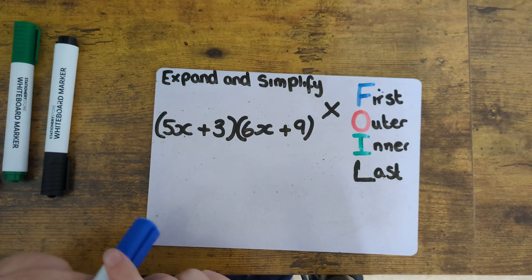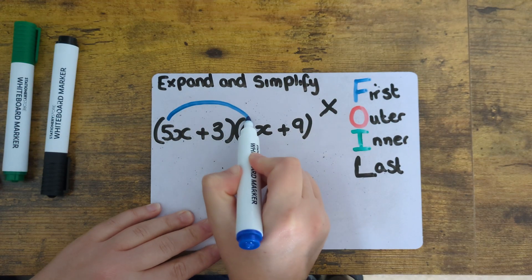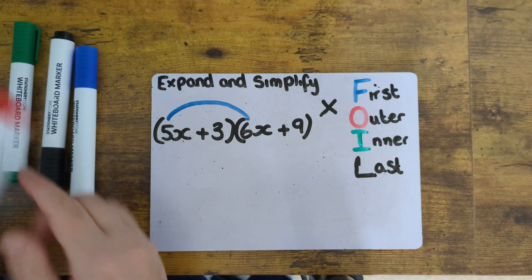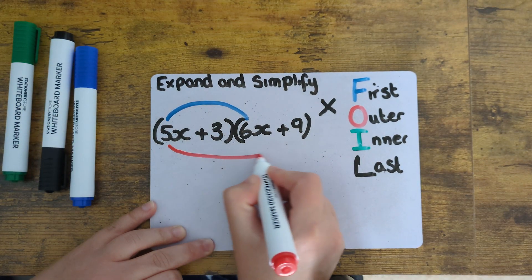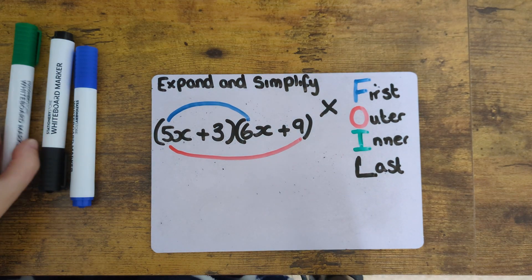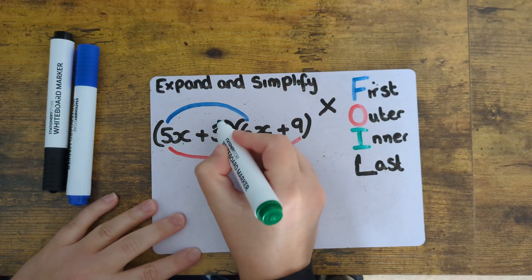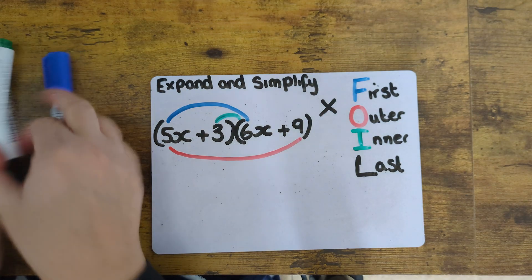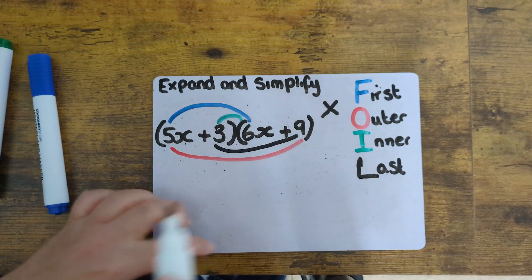Now onto the next one. I'm joining the first terms in both sets of brackets — so the 5x and the 6x. Then the outer terms — the 5x and the 9. Then the inner terms — the 3 and the 6x. And then finally the last terms in both sets of brackets — the 3 and the 9.